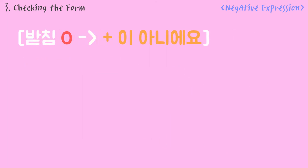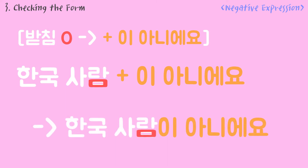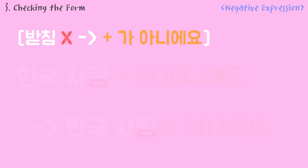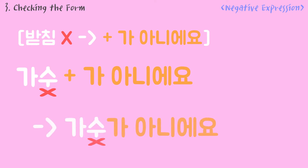If there is a 받침 in the noun, like 한국 사람, you can use 이 아니에요. So it becomes 한국 사람이 아니에요. If there is no 받침 in the noun, like 가수, you can use 가 아니에요. So it becomes 가수가 아니에요.